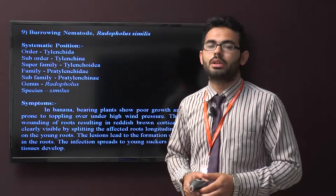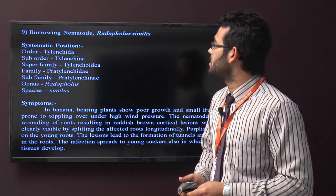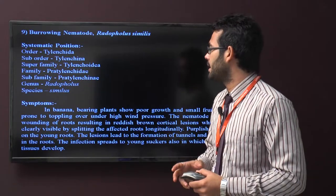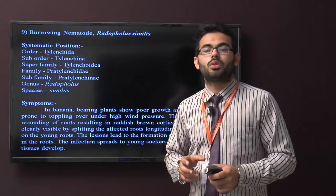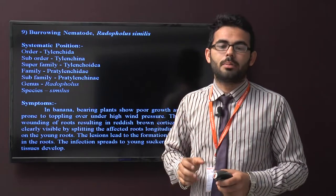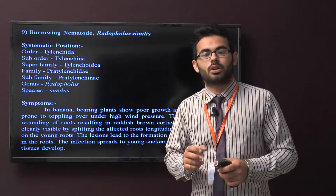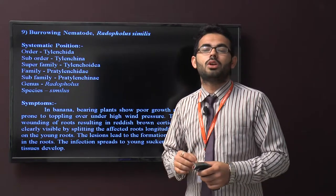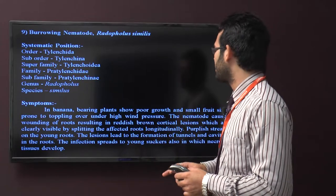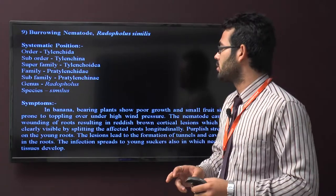Ninth is burrowing nematode, scientific name Radopholus similis. Symptoms generally occur in banana bearing plants: poor growth, small fruit size, prone to topping. The nematode causes wounding of roots resulting in reddish-brown cortical lesions which are clearly visible when splitting affected roots longitudinally. It also causes toppling of root system.